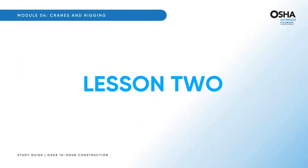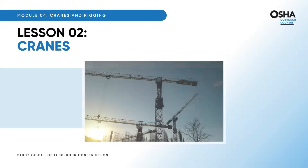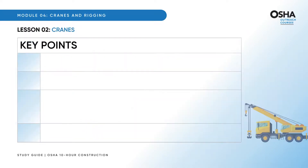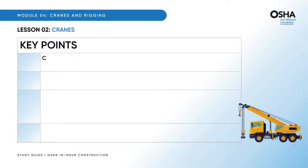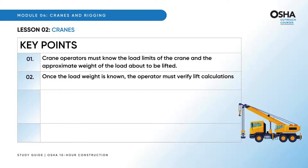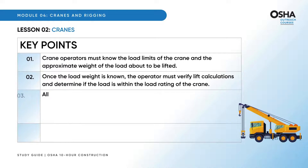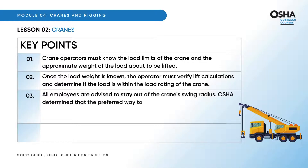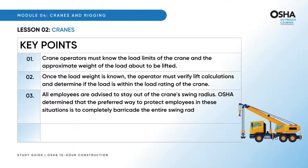Let's dive right into lesson two, exploring the safe world of cranes. The key points are: crane operators must know the load limits of the crane and the approximate weight of the load about to be lifted. Once the load weight is known, the operator must verify lift calculations and determine if the load is within the load rating of the crane. All employees are advised to stay out of the crane's swing radius. OSHA determined that the preferred way to protect employees in these situations is to completely barricade the entire swing radius of the equipment and prevent employee access to the area.